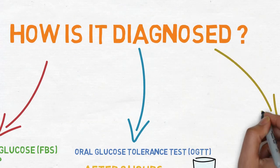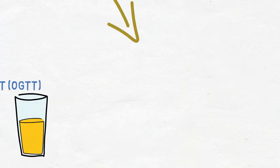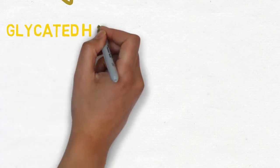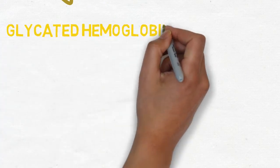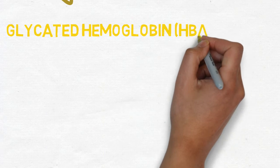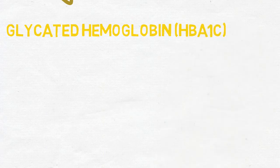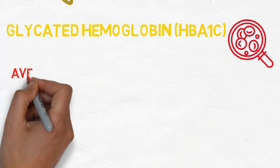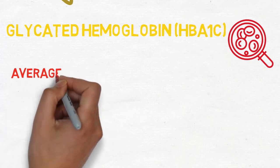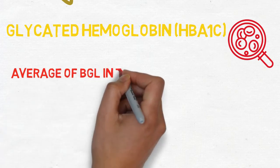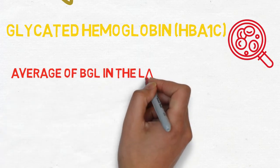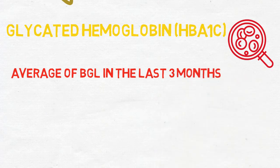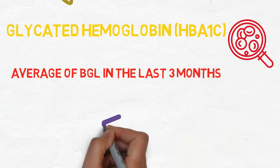The third test is glycated hemoglobin bound to hemoglobin, which gives an estimate or an average of the blood glucose level for the last three months. For non-diabetics, it should be less than 7%.